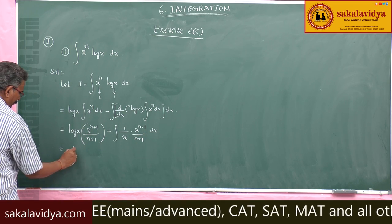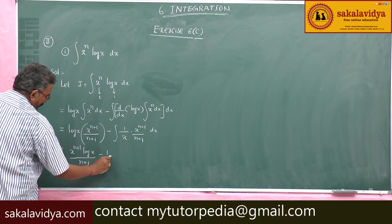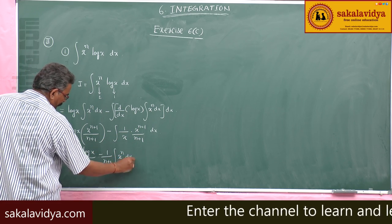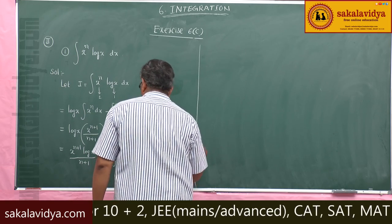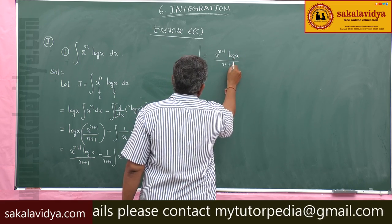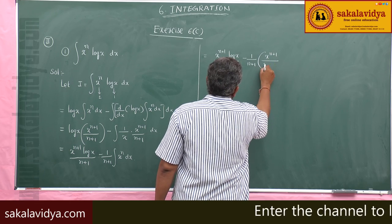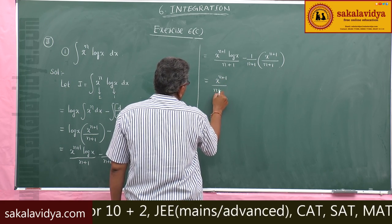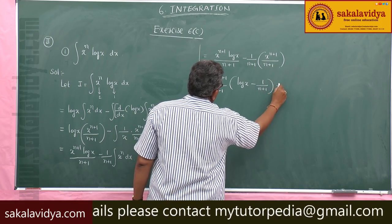This gives x to the power of n+1 times log x divided by (n+1), minus 1/(n+1) taken out, times the integral of x to the power of n+1 divided by (n+1). So we get x to the power of n+1 divided by (n+1), with log x minus 1/(n+1), plus constant of integration.